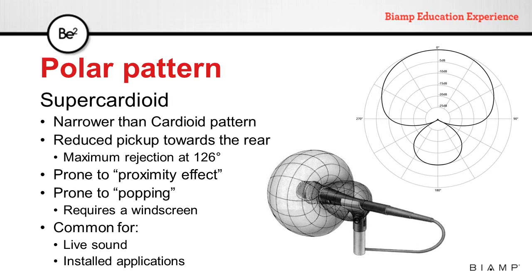The supercardioid polar pattern is narrower than the cardioid pattern. But to create this pattern, a small pickup lobe is created in the back of the microphone. The maximum rejection is now moved to 126 degrees from the front. They are prone to proximity effect and popping, so they also require a windscreen. As with cardioid microphones, usually this windscreen is built inside the grill of the microphone. They are also very common for live sound and installed applications.